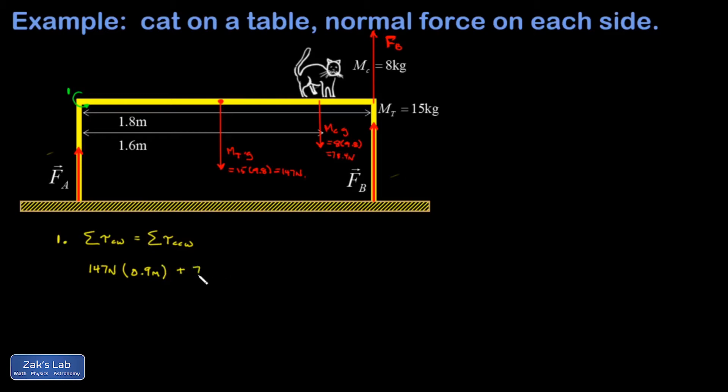Plus for the cat, I have 78.4 newtons exerted through a lever arm of 1.6 meters. That has to be equal to the sum of all the counterclockwise torques. And it's F_B that's providing that, and that's our unknown. So I have F_B acting through a distance of 1.8 meters. I can crunch all that in my calculator and find the upward force on the right legs of the table. And that comes out to 143.2 newtons. Now, I traditionally just round everything to three sig figs, so I'm going to call it 143 newtons.